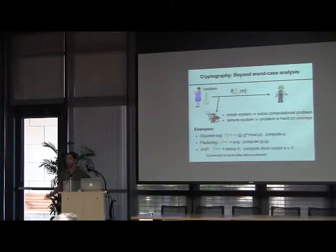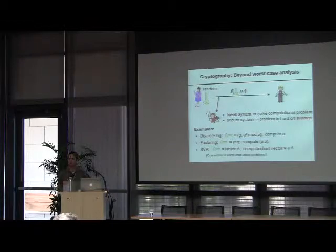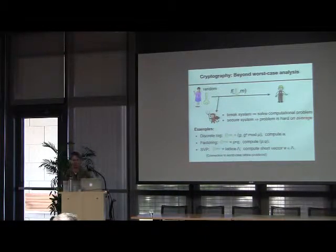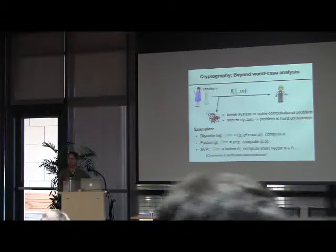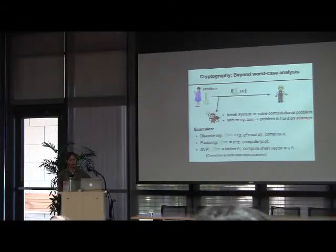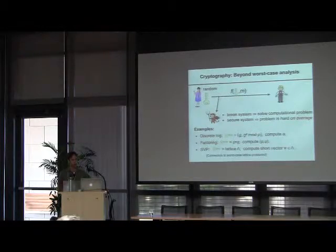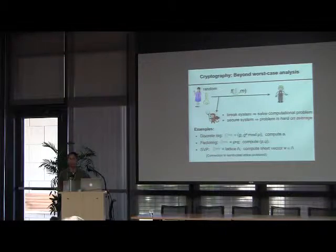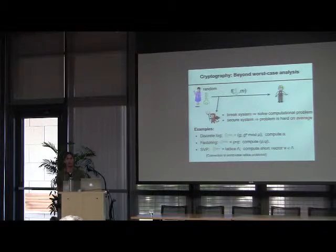There are some connections to worst case here. For the discrete log, for a fixed prime p or a fixed group, we can take a worst-case instance over that group and reduce an average-case instance to a worst-case instance there. But between different groups, there's no known connection. For the shortest vector problem in lattices, as Luca mentioned in his talk on Monday, for certain distributions of lattices there are connections to solving lattice problems in the worst case.